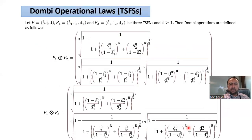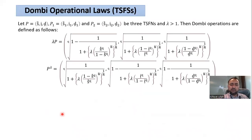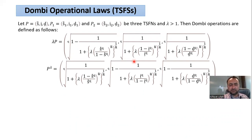In the proposed work, first we define Dombi operational laws for T-spherical fuzzy sets. These include Dombi sum, Dombi product, Dombi scalar multiplication, and Dombi power operation — all based on the Dombi T-norms and Dombi T-conorms. These operations are the generalized forms of Dombi operations for Q-rung orthopair fuzzy sets, picture fuzzy sets, spherical fuzzy sets, intuitionistic fuzzy sets, and so on.